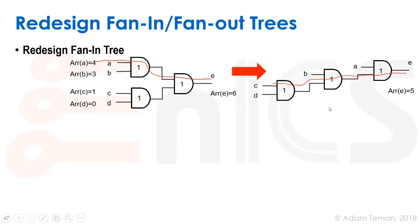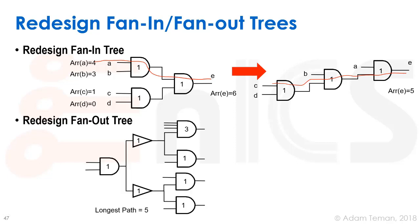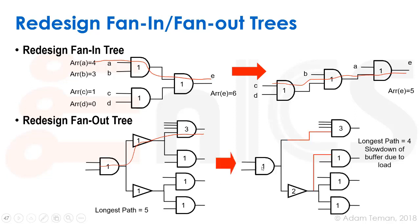Redesigning the fan-out tree is a similar type of thing. If we look here, our longest path is from our AND gate through this inverter through this four-input AND gate which has a large delay, and that took us five time units. We can redesign the fan-out tree in this way.